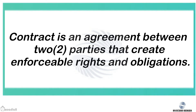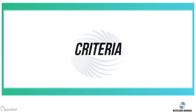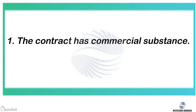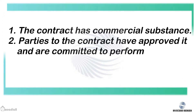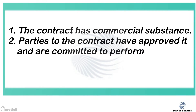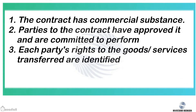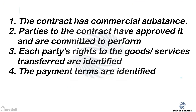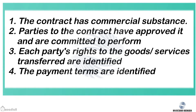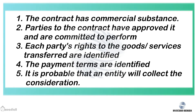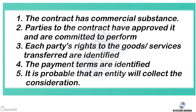To identify a contract, we need to meet the following criteria: one, the contract has commercial substance; two, the parties to the contract have approved it and are committed to perform; three, each party's rights to the goods or services transferred are identified; four, payment terms are identified; five, it is probable that the entity will collect the consideration.